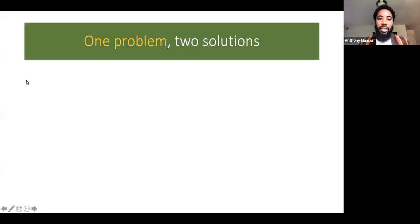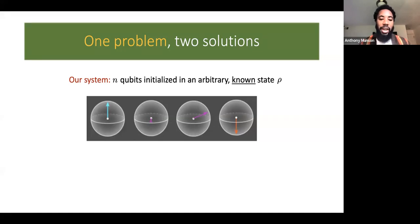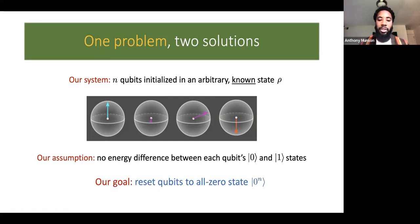Let's begin with a simple question. We consider a system of n qubits initialized in an arbitrary known state rho. We make a simplifying assumption: there will be no energy difference between each qubit's zero and one states, which implies there's no energy difference between any n-qubit states. Another way to say this is that we will be working with a completely degenerate Hamiltonian. Our goal is to reset the qubits to the all-zero state, denoted as zero to the n. We care about this because in many practical situations it's useful to initialize a system into a simple and easily manipulated state like the all-zero tensor product state.